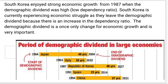The student clarifies that South Korea enjoyed strong economic growth from 1987, when the demographic dividend was high. South Korea is currently experiencing economic struggle as it leaves the demographic dividend, because there is an increasing dependency ratio. The demographic dividend is a once-only chance for economic development and therefore is very important. The student reinforces the spiral argument by showing South Korea is now towards the end of its demographic dividend and experiencing a downturn and recession.